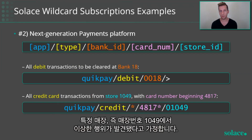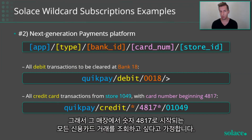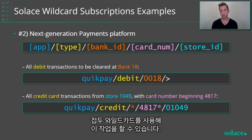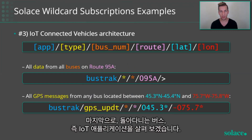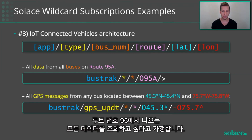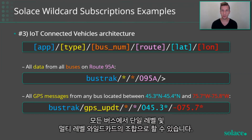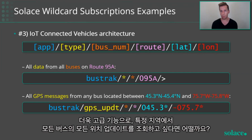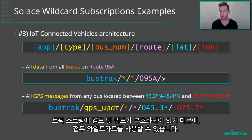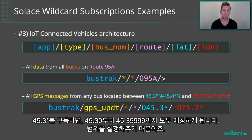Or perhaps you've noticed some weird behavior coming out of a particular store — store 1049 — and you want to listen to all credit card transactions for that store that start with the numbers 4817. You could do that using the prefix wildcard. For our IoT buses application, to listen to all data coming out of route 95 — all buses, regardless of whether they're positional updates, status messages, or trouble messages — you can do that with a combination of single-level and multi-level wildcards. And for a more advanced use case: because latitude and longitude are encoded in the topic string, using the prefix wildcard and subscribing to '45.3*' will match anything from 45.30 all the way up to 45.39999, essentially giving you a geographic range.